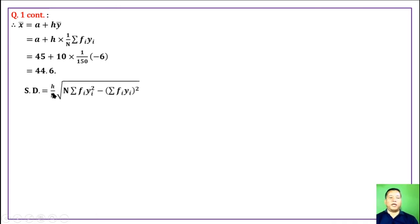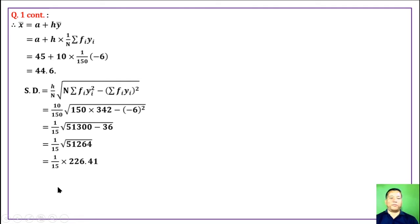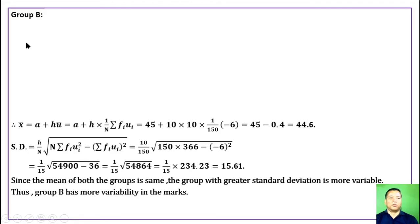Standard deviation formula is S by n times square root of n summation of FIYI square minus summation of FIYI whole square. The standard deviation for Group A is calculated.